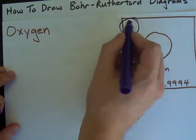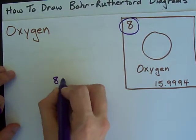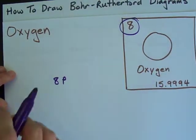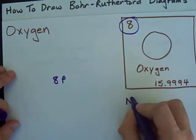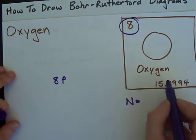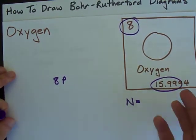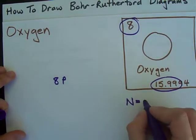Oxygen has 8 protons. The number of protons is always the same as the atomic number. The number of neutrons that oxygen has is the atomic mass, which you can get from your periodic table, is about 16.